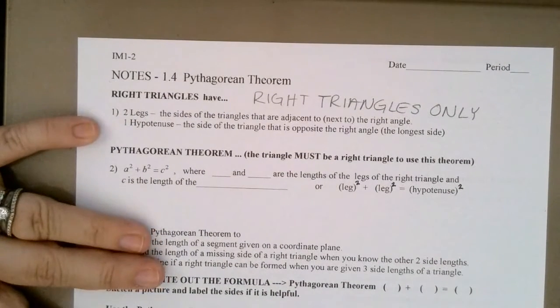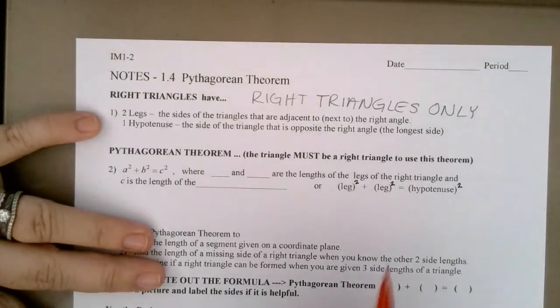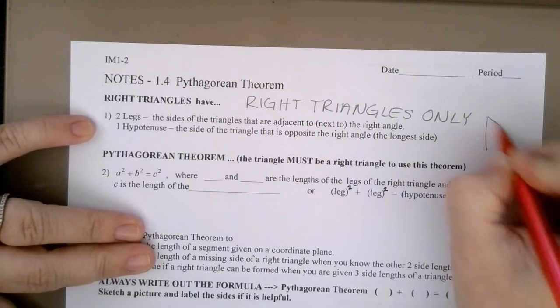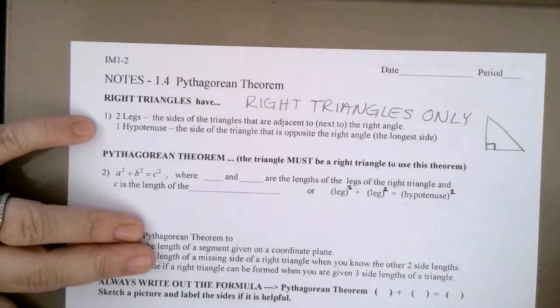So, if the Pythagorean Theorem can be used on right triangles only, what do we know about right triangles? They are triangles that have a 90 degree angle.